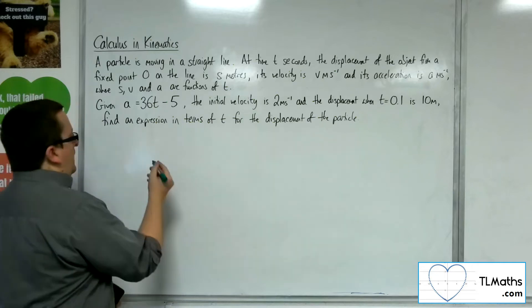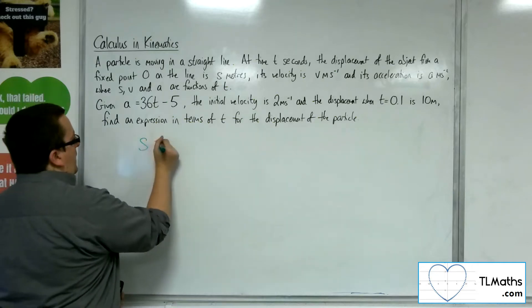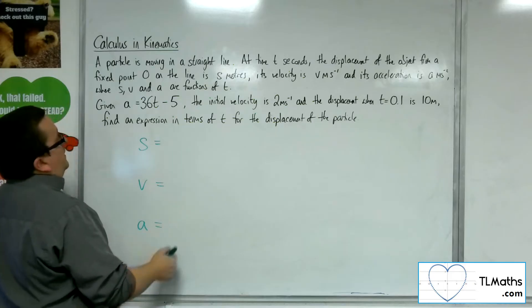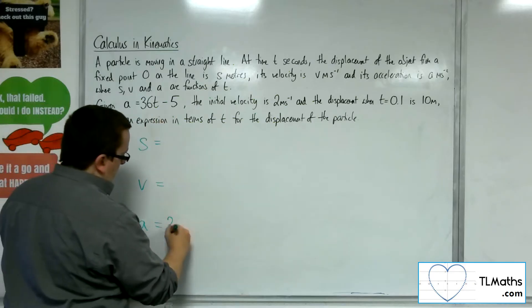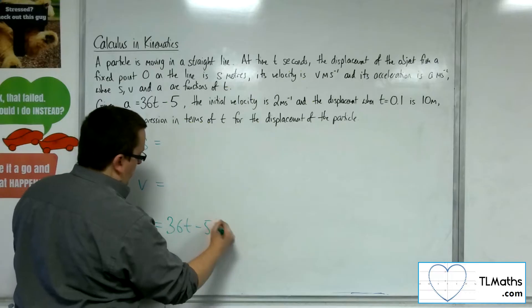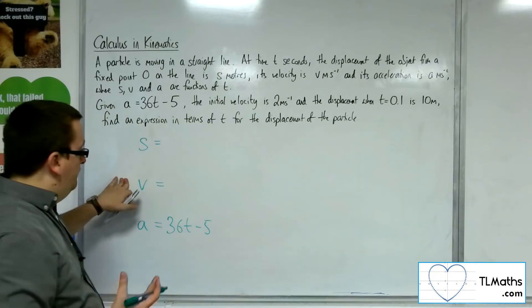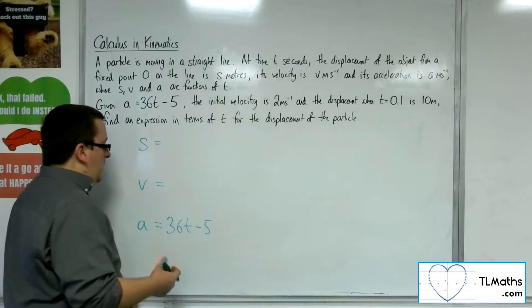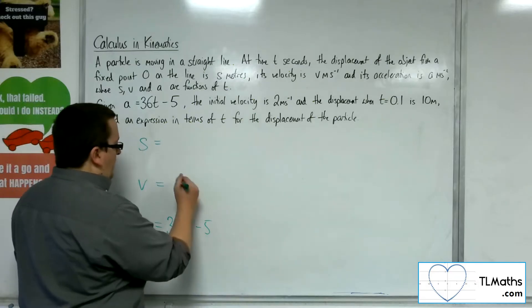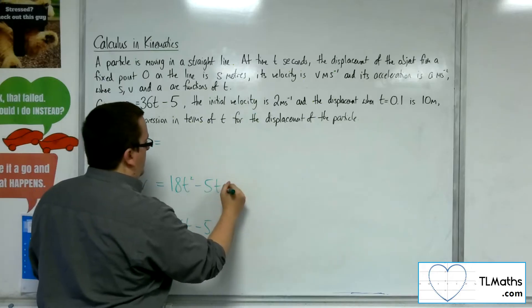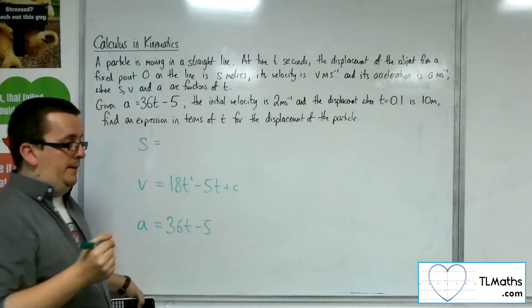OK, so we're going to write down s, v and a. Now the a is the 36t minus 5. Now in order to get up to the velocity, I'm going to have to integrate. So integrating this, I'm going to get 18t squared minus 5t plus some constant c.